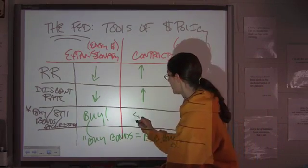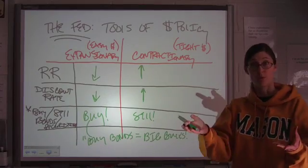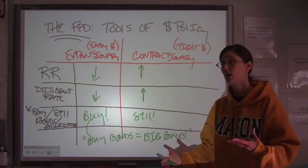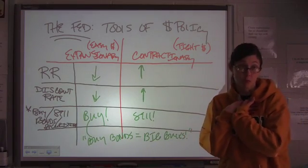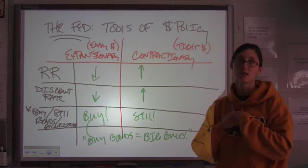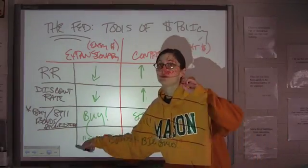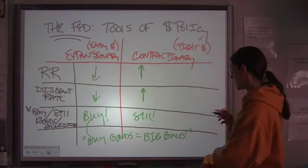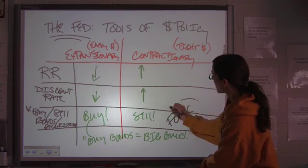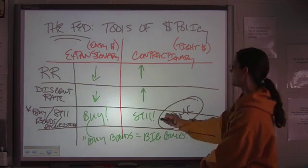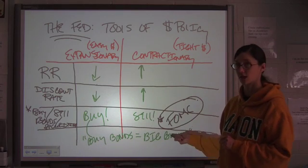Because if the Fed sells government bonds on the open market — they do this all the time — then you, the members of the public, buy the bonds. The Fed takes your money and keeps it, thereby reducing the money supply. Now, if you hear about the Fed being engaged in open market operations, the Federal Open Market Committee — FOMC — is the piece of the Fed, the entity that makes those decisions.